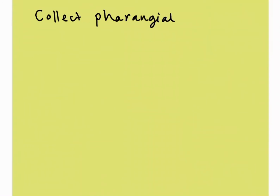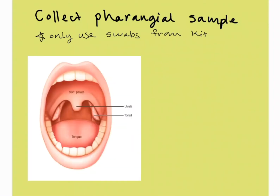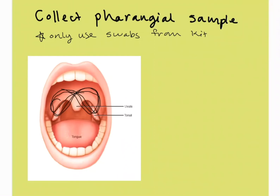The CLIA waived Strep A test kit requires a sample taken from the back of the patient's throat with a swab from the kit. To collect the sample, rub the swab a couple of times on each side of the throat, or you can do a figure eight that goes above the uvula. You don't want to hit that uvula because otherwise you're going to make your patient gag.